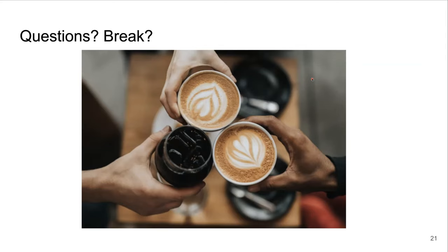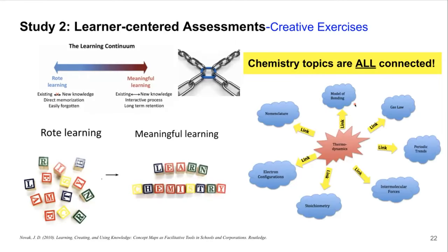Moving on to the next study — I've studied a couple of novel learner-centered assessments that try to help students make connections across topics. The reason is to help students achieve meaningful learning. As educators, we often teach chapter after chapter, and students may learn a chapter well but then forget earlier material by the end of the course. We hope students can have holistic learning and make connections across topics. The analogy: if you memorize a bunch of random letters, you might remember them briefly but forget after a few days. But if I organize those letters to spell 'learn chemistry,' you'd remember it easily for much longer.